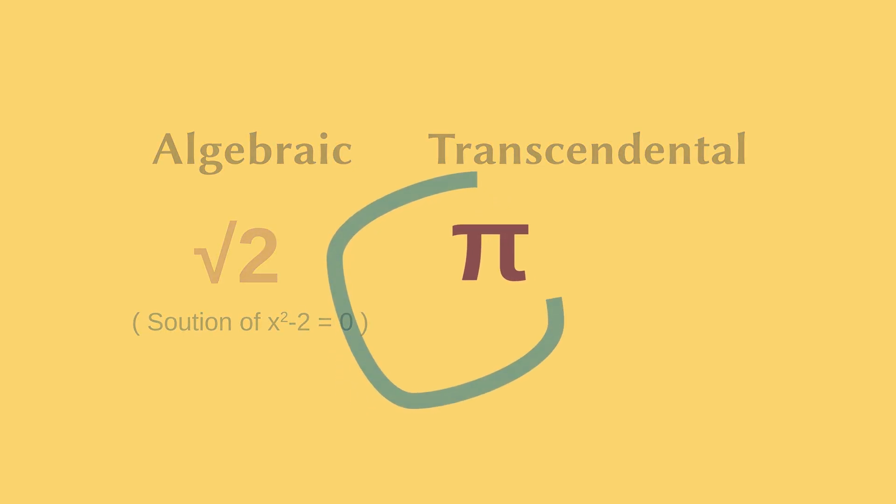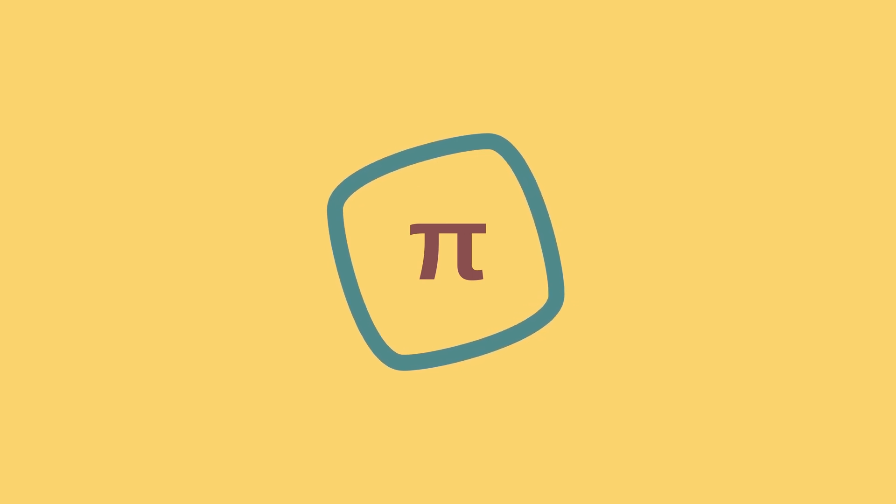This is what makes π different from √2. So it turns out you can't make a line of length equal to a transcendental number like π. So this transcendental nature of π makes our problem impossible.